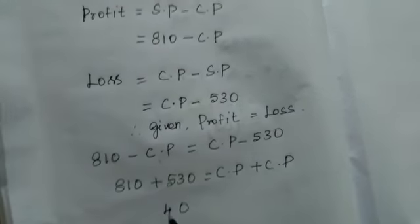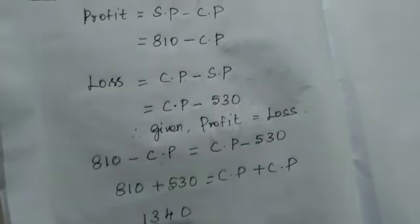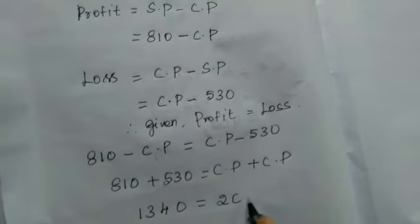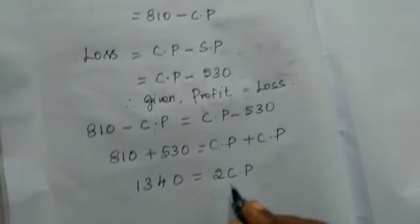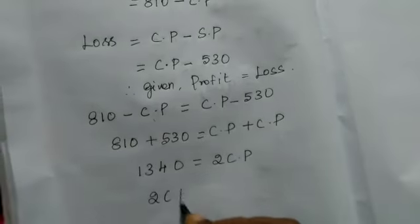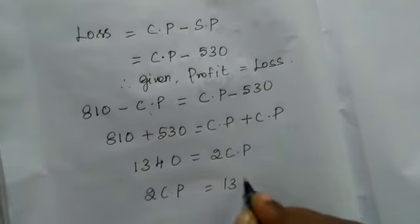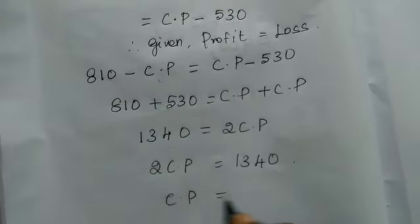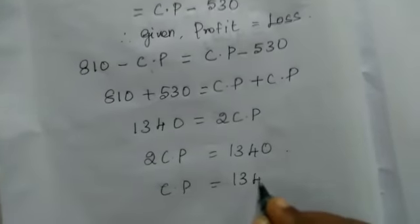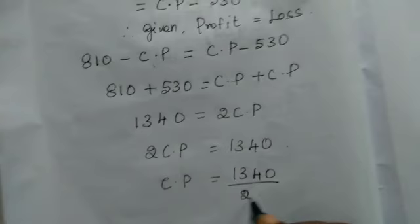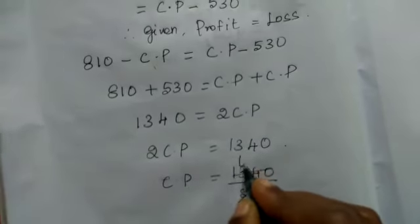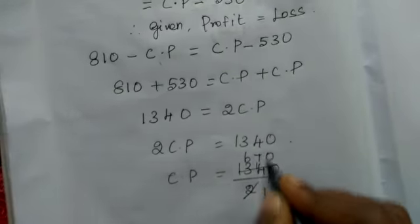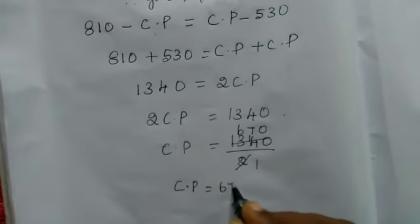Now it's rearranged. 2 cost price equals 1340. Cost price equals 1340 divided by 2, which equals 670. So what's the cost price of the article? 670 rupees.